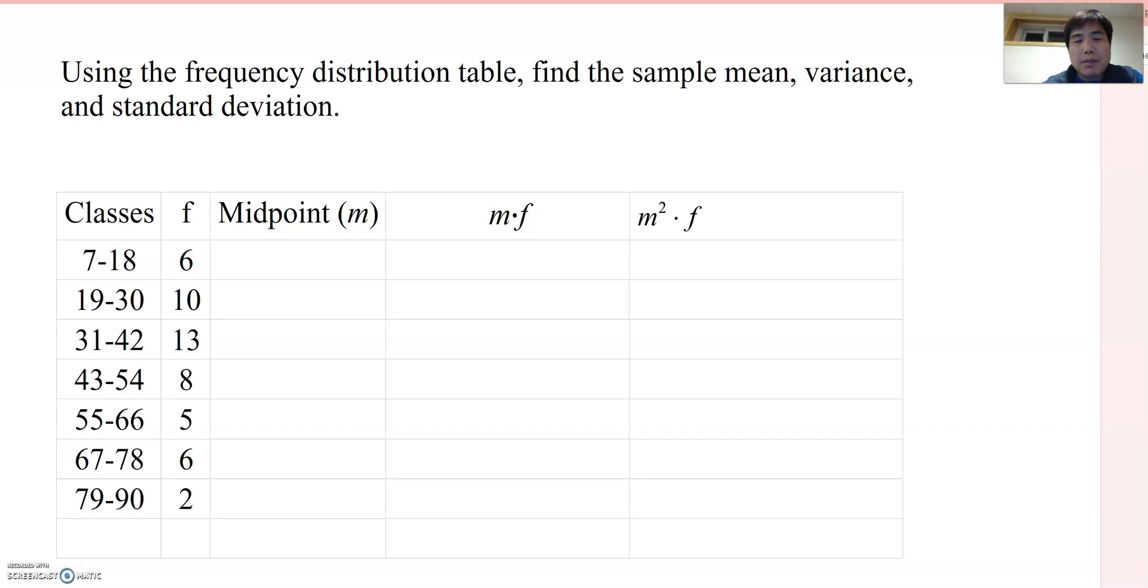The first step is we need to find the midpoint here. Then how to find the midpoint? Yes, you are combining lower limit and upper limit and divided by 2. Then the first class midpoint becomes 12.5.